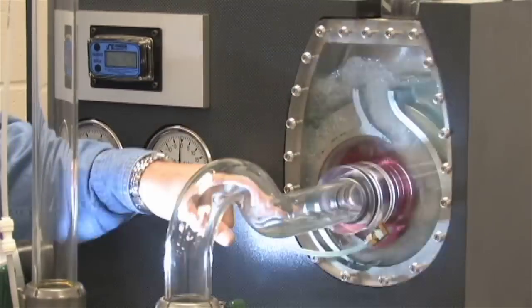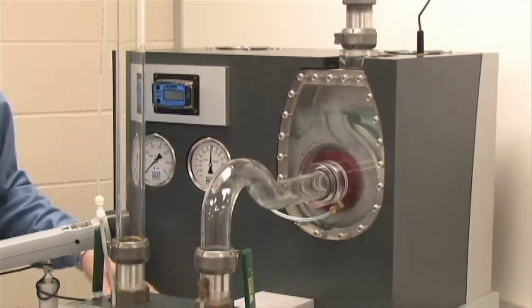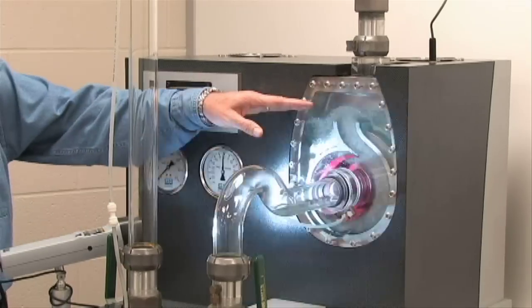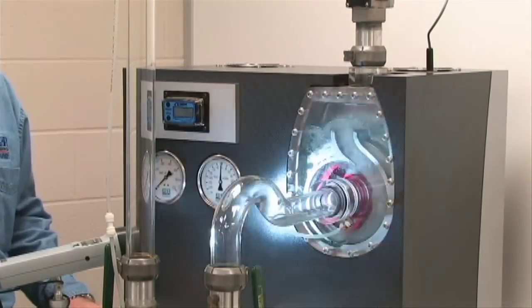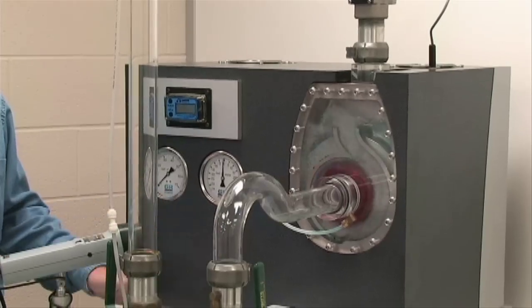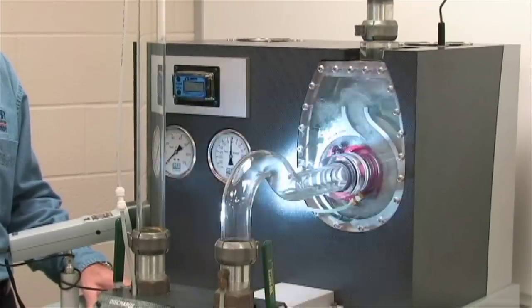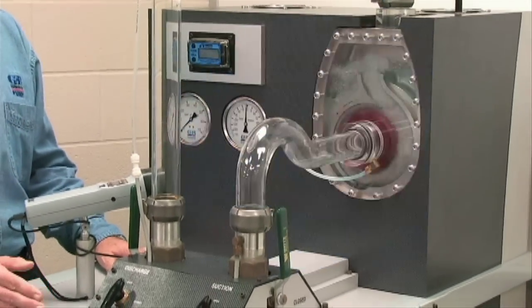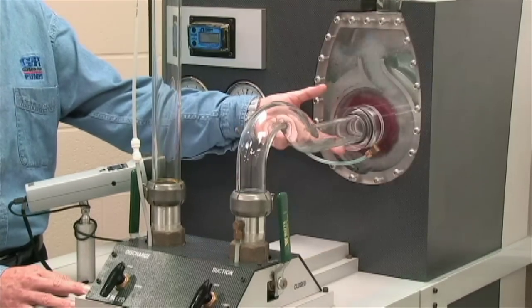All the while that we recirculate the water inside the casing and remove the air from the top, we create a low pressure at the eye of this impeller. Due to differential in pressure, atmospheric pressure that we live around every day is higher than the lower pressure created at the eye of this impeller.